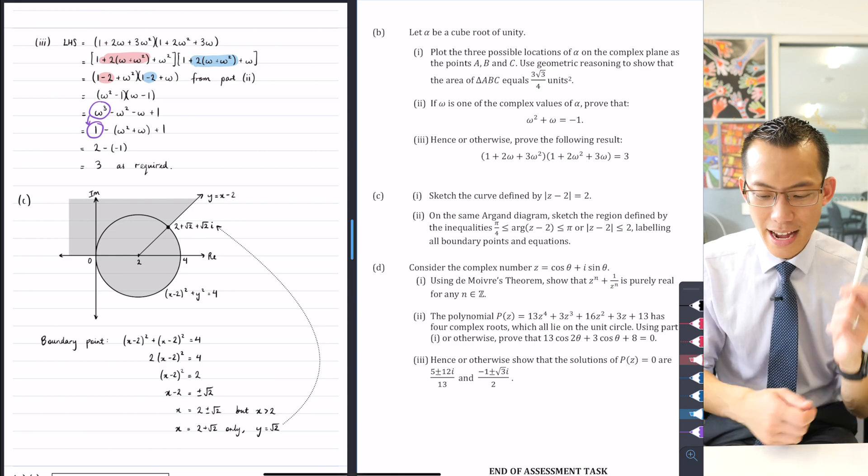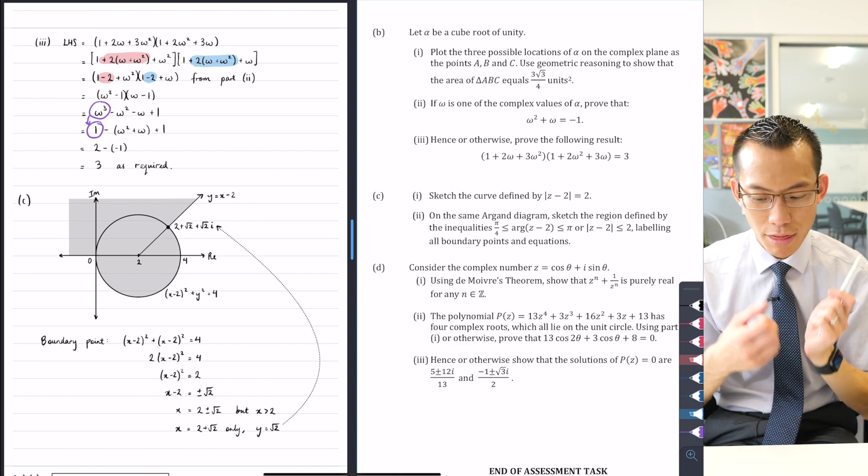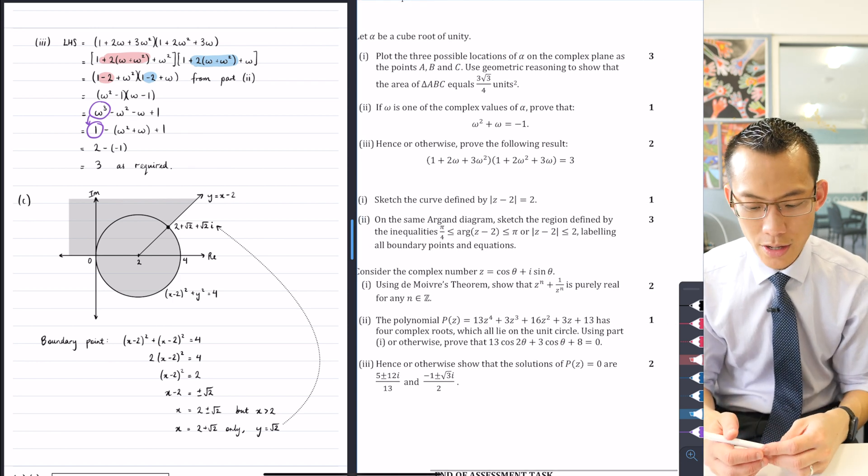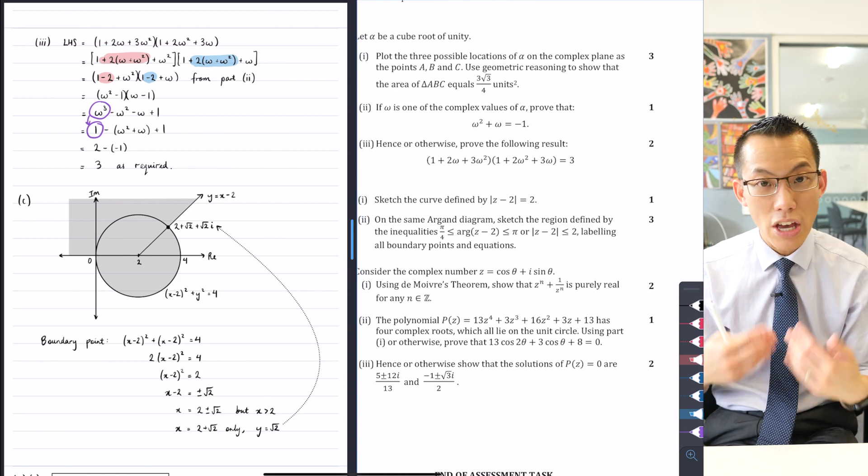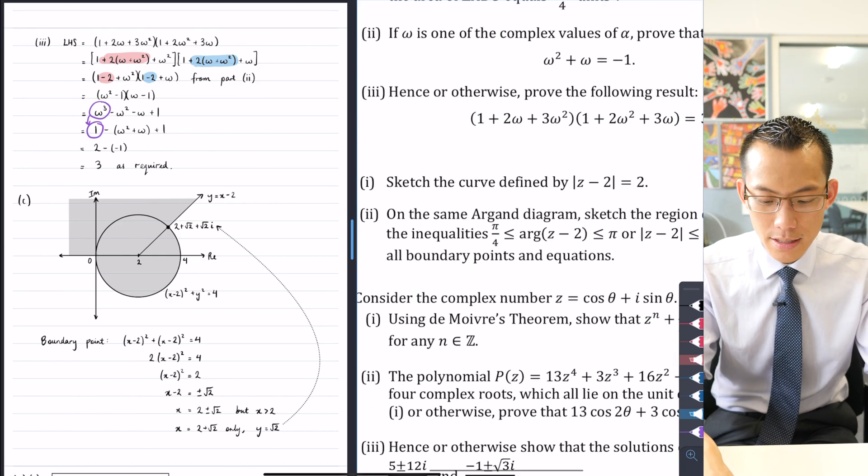But then on the same Argand diagram there were three things being looked for when you've got a three mark question.